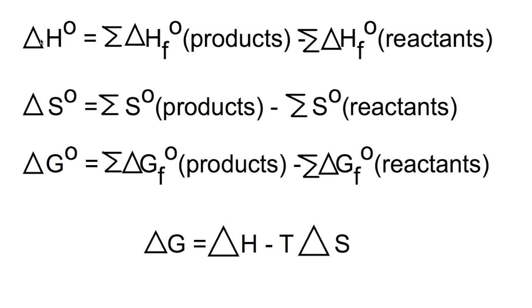The first equation is the standard enthalpy change for a reaction where you add up the standard enthalpy of formation for all of the products minus the standard enthalpy of formation of the reactants.